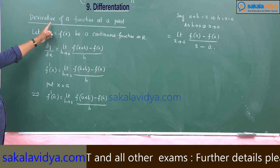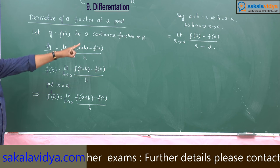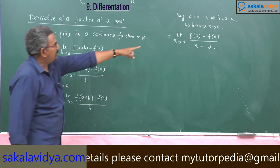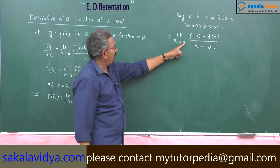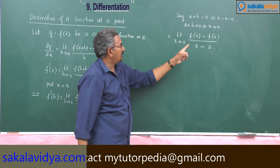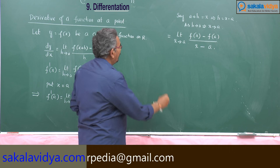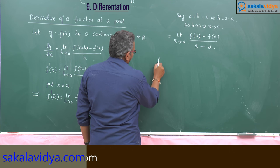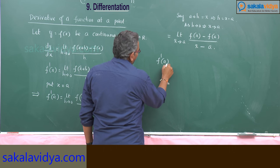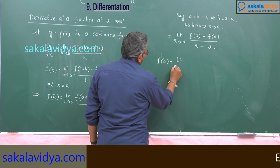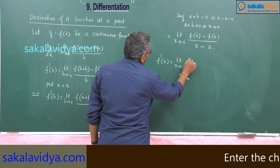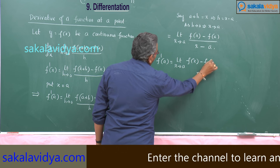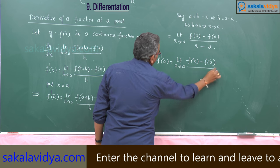The derivative of a function at a point x equal to a is defined by f dash a is equal to limit x tends to a, f of x minus f of a by x minus a. That means f dash a is equal to limit x tends to a, f of x minus f of a by x minus a.